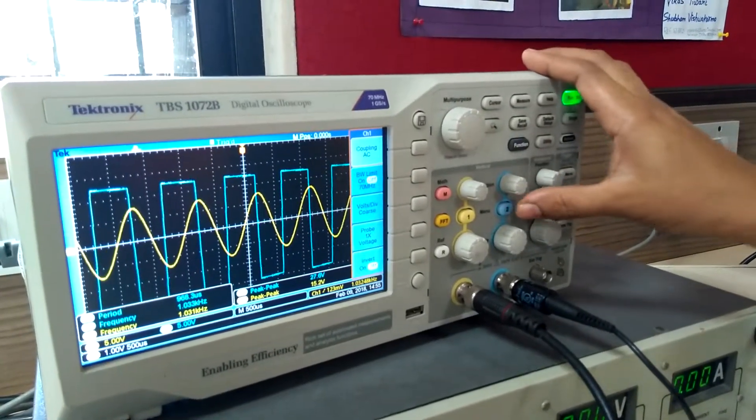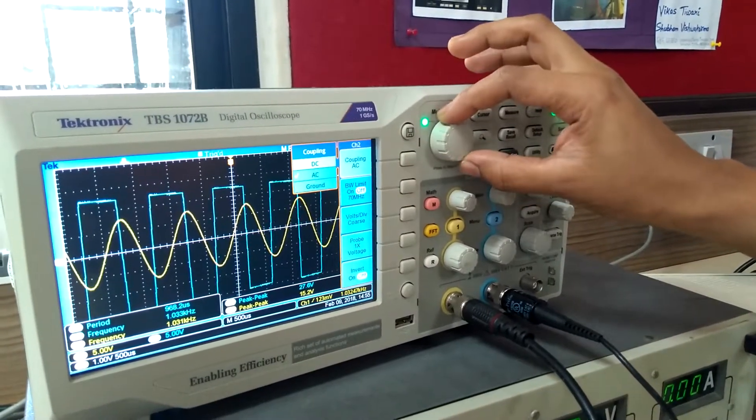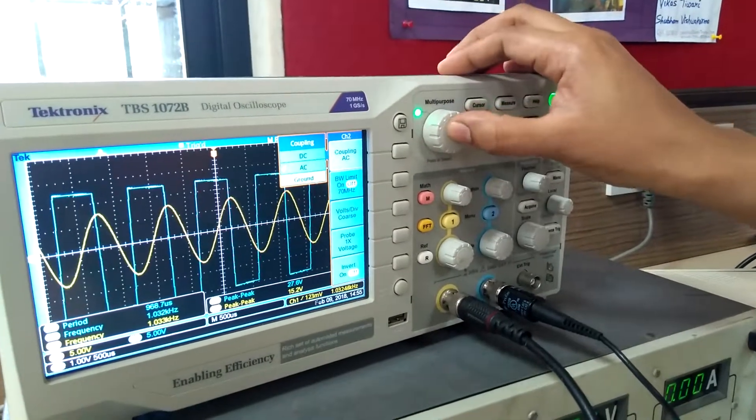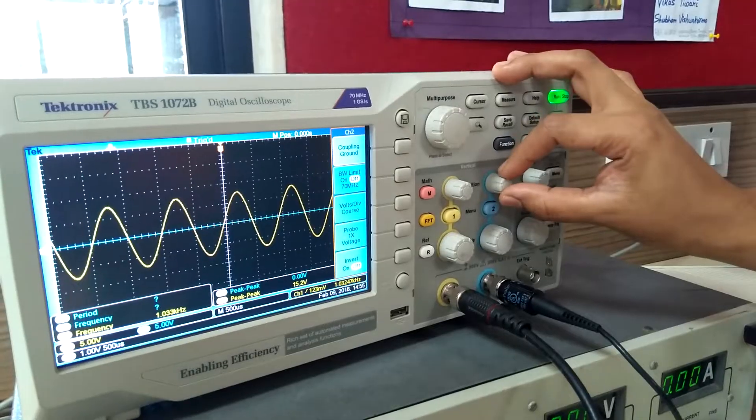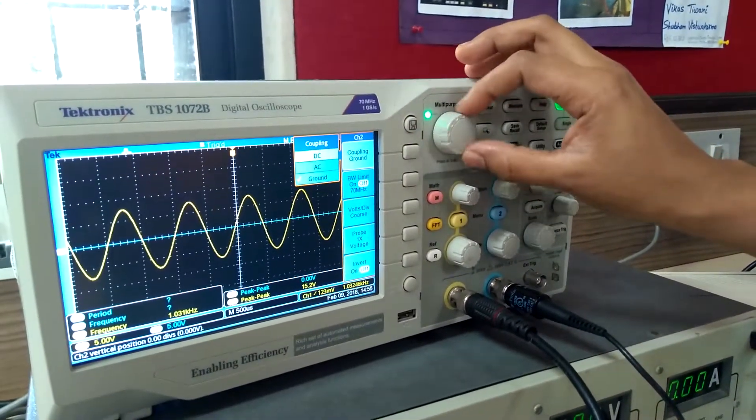Similar way, select channel 2, coupling, ground. Again, change to AC signal.